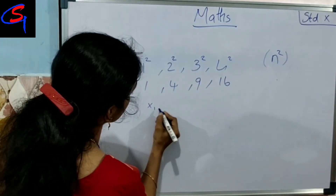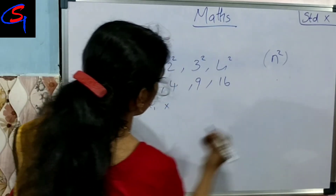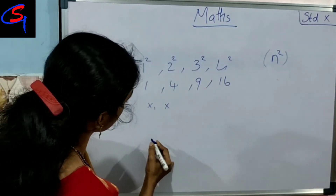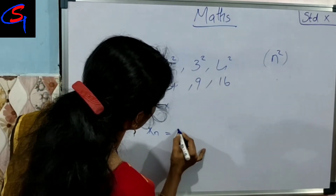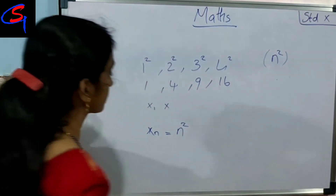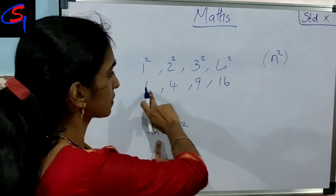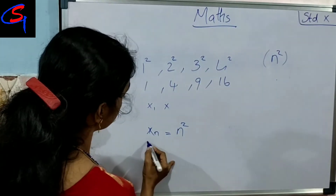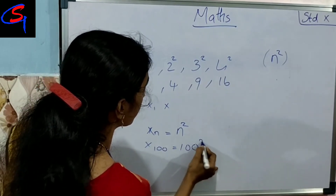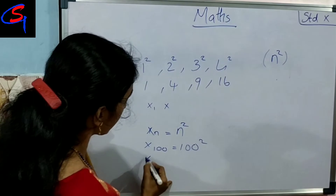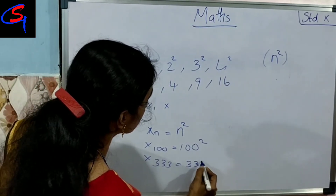Then x1, x2, x3, xn. xn is equal to n square. That's the answer. x3 — there is a lot of n square.